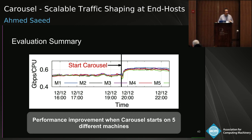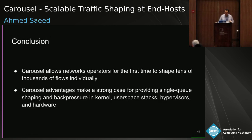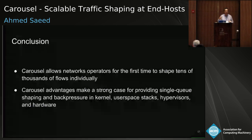In conclusion, Carousel allows network operators for the first time to shape tens of thousands — and we think in the future millions — of configured rates individually. Its advantages make a strong case for deploying its abstractions in other scenarios: in the kernel, in software stacks, in hardware, and in hypervisors.